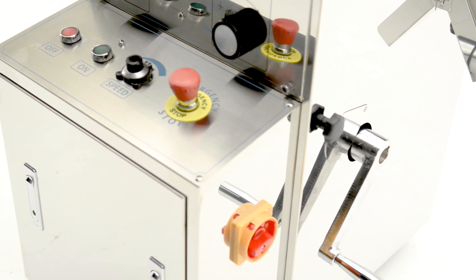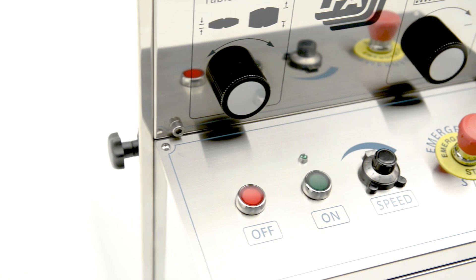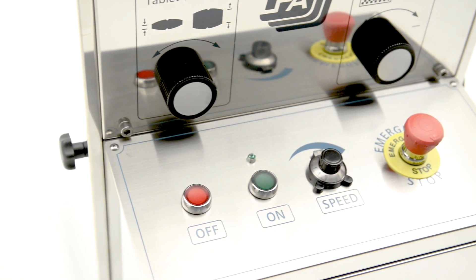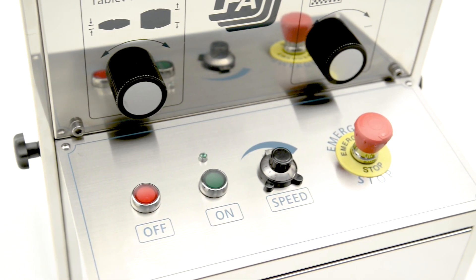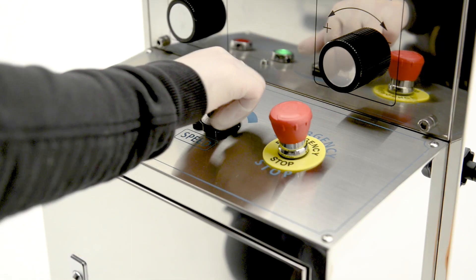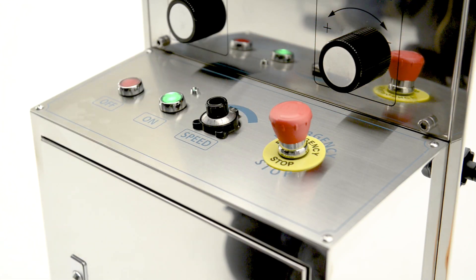Easy controls. The RTP-118 features fill depth and punch pressure adjustment, an on and off switch, as well as an emergency stop button. Also a speed control which will allow you to control the dwell time on your machine.